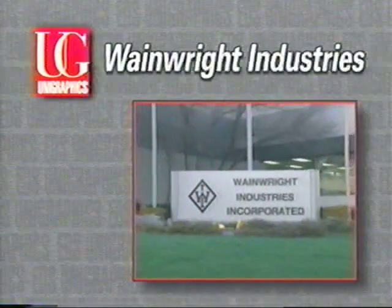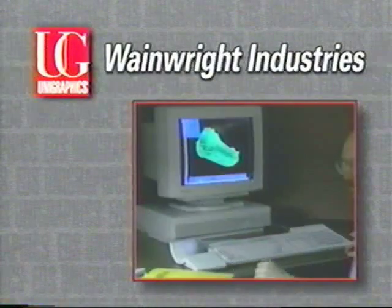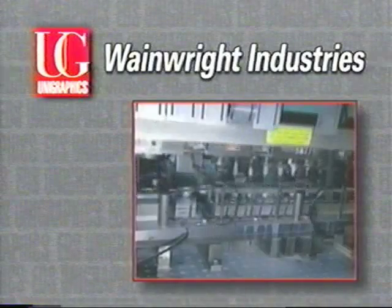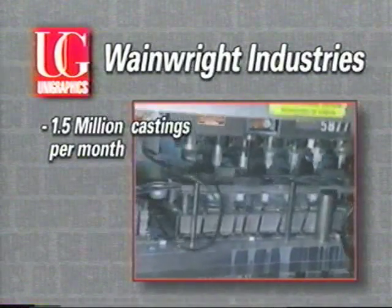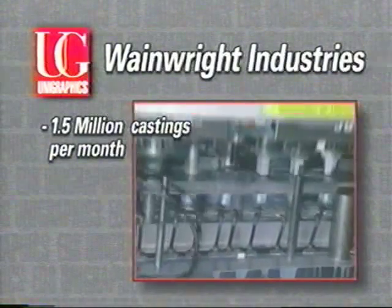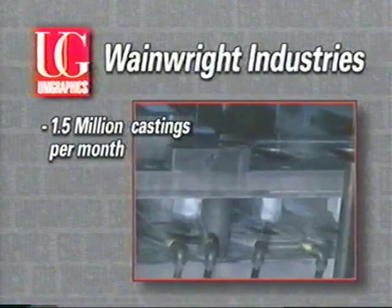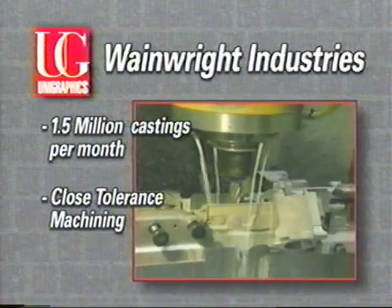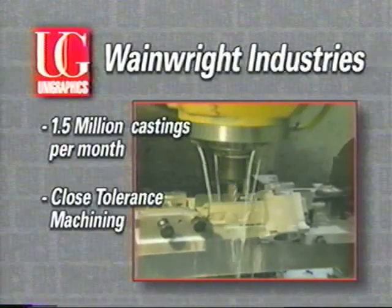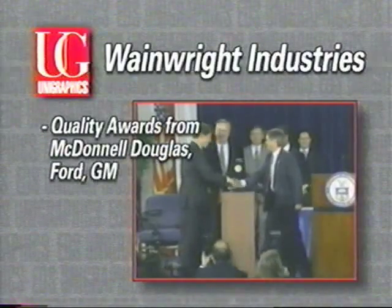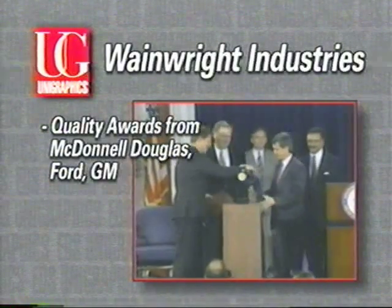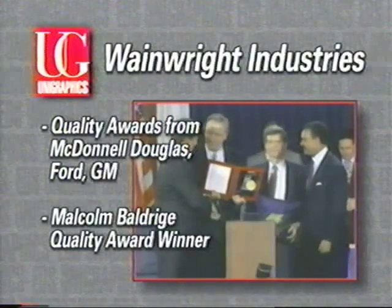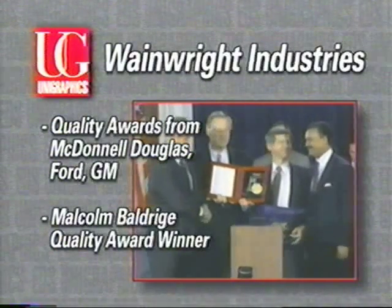Wainwright Industries uses Unigraphics and is a leading supplier to both the automotive and aerospace markets. With Unigraphics, Wainwright produces as many as 1.5 million castings a month for General Motors, and provides close tolerance machining of complex multi-shape parts for McDonnell Douglas. Quality is key at Wainwright — the company has won several awards for its quality parts and is a recent Malcolm Baldrige Quality Award winner.